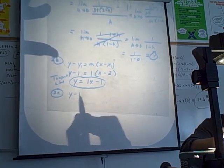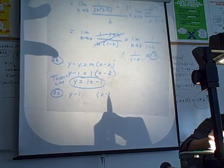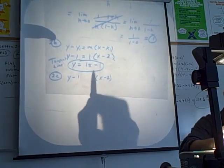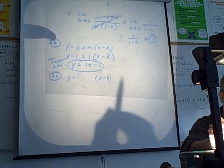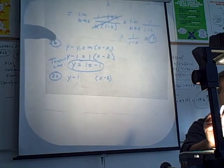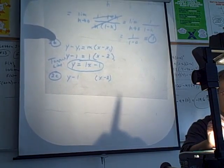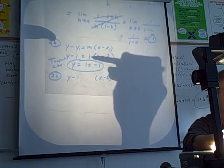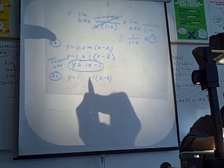So I'm still going to have y minus 1, and I'm still going to have x minus 2, because it's still going to go through that same point that's given up at the top. But now it's going to have to be a different slope and be perpendicular. So perpendicular slopes are opposite reciprocals. So you flip the fraction over, and then you change the sign. If you flip 1 over, you still have 1. Then you change the sign, you have negative 1.